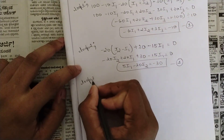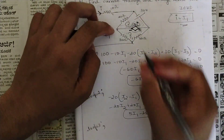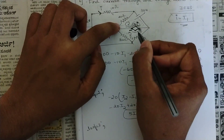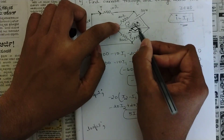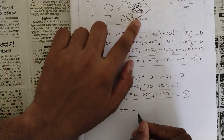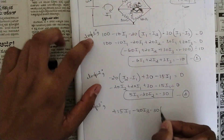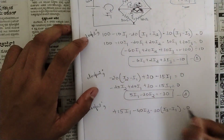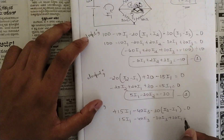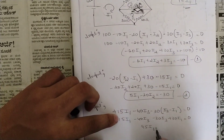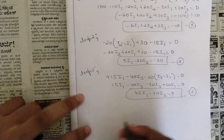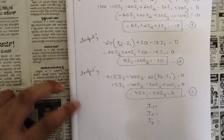Apply KVL on loop 3: from the dependent source the outward sign here is plus (signs are fixed for dependent sources), so plus 15i1 minus 40·i3 minus 30·(i3 minus i1) equals 0. Expanding: 15 i1 minus 40 i3 minus 30 i3 plus 30 i1 equals 0, giving 45 i1 minus 70 i3 equals 0. Name this equation 3.